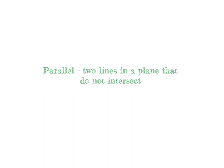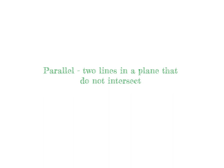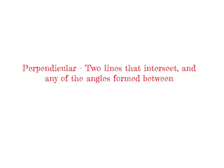Parallel is two lines in a plane that do not intersect. Perpendicular are two lines that intersect in any of the angles formed between.